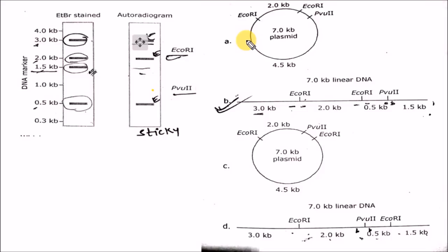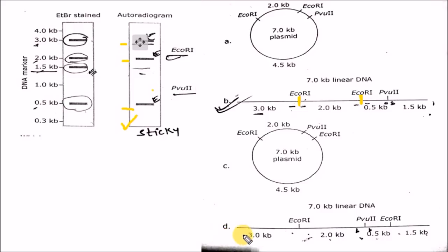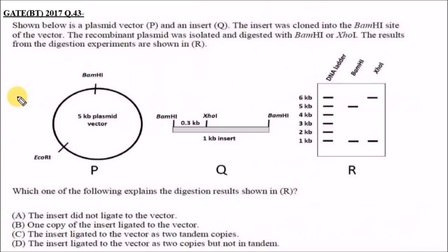The sticky ends are provided by EcoRI in this question. Looking at the options for the autoradiogram, three bands are present: 0.5 kb, 2 kb, and 3 kb. From the diagram, cutting with EcoRI gives a 3 kb sticky-ended band, a 2 kb sticky-ended band, and a 0.5 kb sticky-ended band. In option D, a 1.5 kb sticky-ended band is also generated, but the autoradiogram shows only three bands of 0.5, 2, and 3 kb, so B is the answer, not D.